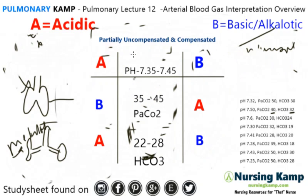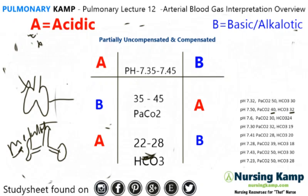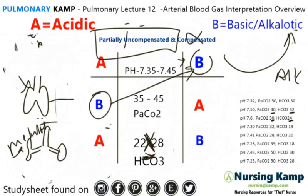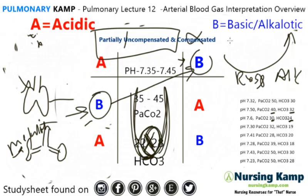Next: the pH is 7.6, which is outside the normal area. So it has to be either partially or uncompensated — it can't be compensated. We have a PaCO2 of 30 circled over there, and a bicarb of 24 in the middle. We connect the letters together: it's an alkalotic condition in the respiratory area — respiratory alkalosis. But because we circled in the middle for bicarb, it is uncompensated.